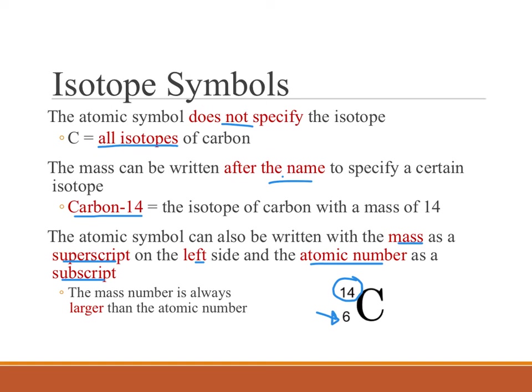If you get confused about which one is which, remember that the mass number is always going to be larger than the atomic number because elements, except for hydrogen, are all going to have neutrons in them. And so, since the mass contains protons plus neutrons, the number will be bigger than the atomic number, which is just protons.